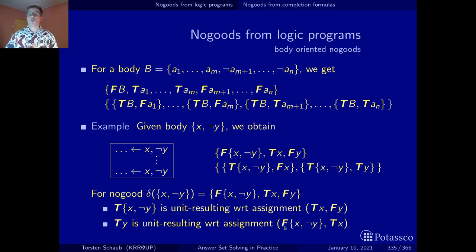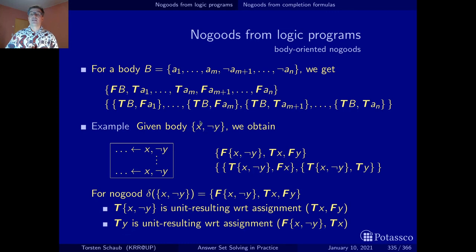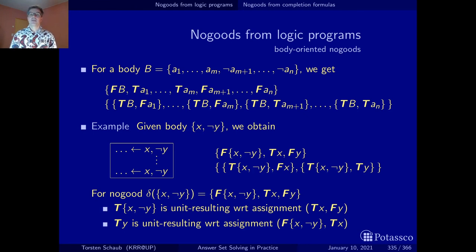Here's another situation: the body has been found to be false but the positive body literal is true. Hence the culprit must be the negative one — we can deduce by unit propagation that y is true and hence that not-y is false. If you want to work through this more carefully, pause the video with a sheet of paper and a pencil and try to work it out in more detail.